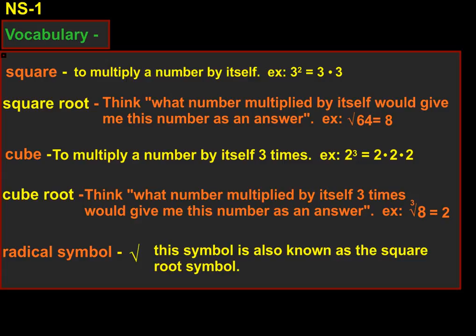And cube root is the opposite of cubing, just like square root was the opposite of squaring. So with a cube root, you want to think to yourself, what number multiplied by itself 3 times would give me this number as an answer? For example, the cube root of 8 is 2, because 2 times 2 times 2 equals 8.